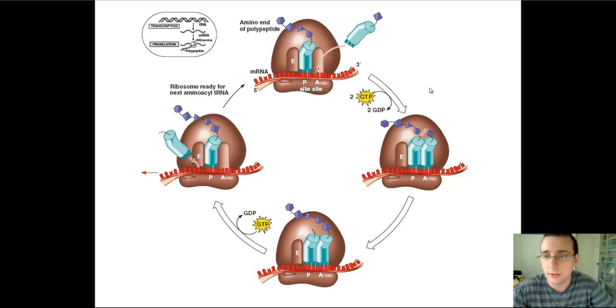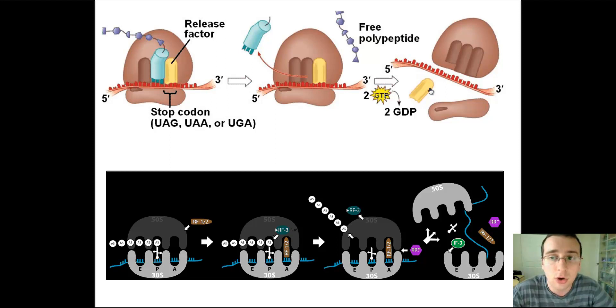This process will continue over and over until finally you reach the point of hitting the stop codon, at which point no transfer RNA can connect. Instead, a molecule called release factor will connect and initiate the separation of the complex, and the large subunit, the small subunit, the messenger RNA, and the now free polypeptide chain will all separate and create the completed protein.